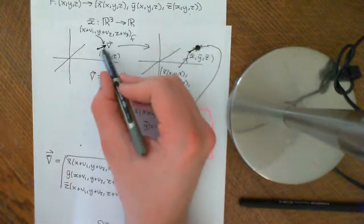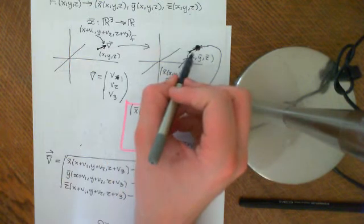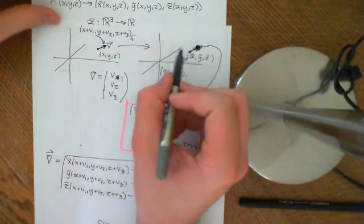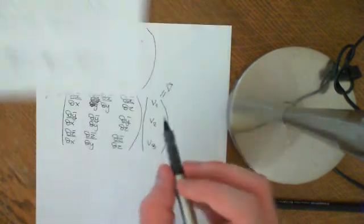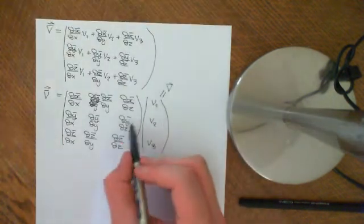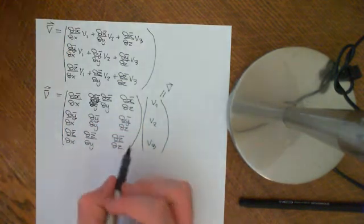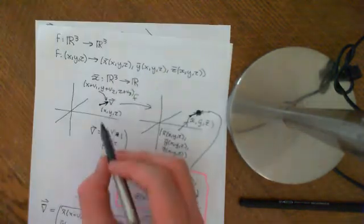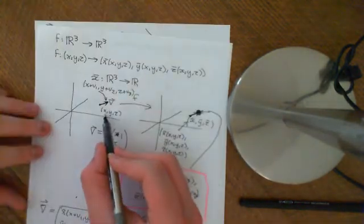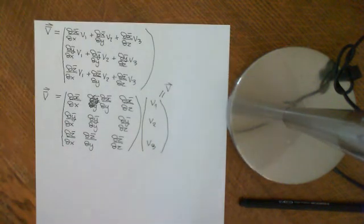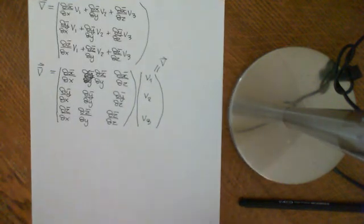So if you take a vector in the original space and want to know what its transformed vector is in the codomain, you take that vector and multiply it by this matrix of partial derivatives — all evaluated at the point x, y, z. We'll continue this discussion in the next video.